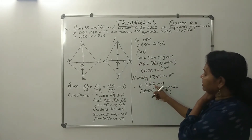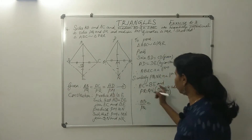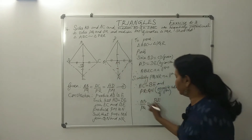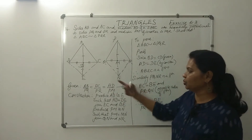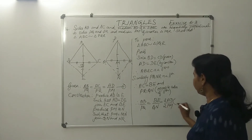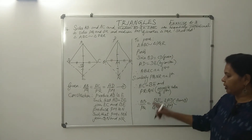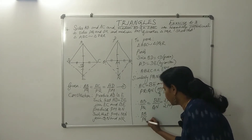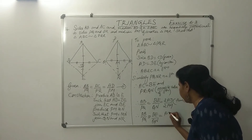So we can equate: AB by PQ equal to BE by QN — since AC equals BE and PR equals QN. That is equal to AD by PM. Multiplying both sides by 2, we get 2AD by 2PM. Therefore, AB by PQ equal to BE divided by QN equal to AD by PM, and the 2 cancels.